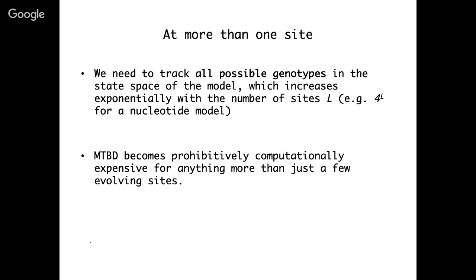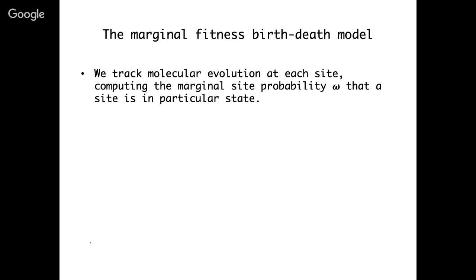But for more than one evolving character state, or if we want to consider an alignment of sequences with multiple sites, we would need to track the evolutionary dynamics of all possible genotypes. The number of possible genotypes grows exponentially with the number of sites in our alignment. This means the multi-type birth-death model becomes prohibitively computationally expensive for anything more than just a few evolving sites. The solution Tanya and I came up with is to make approximations that eliminate the need to track all possible genotypes in sequence space — what we call the marginal fitness birth-death model.